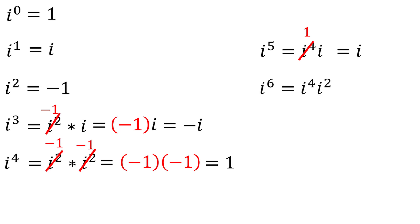i to the sixth is i to the fourth times i squared. But again, i to the fourth is just 1, and we know that i squared is negative 1, which means we have 1 times negative 1, which is equal to negative 1.